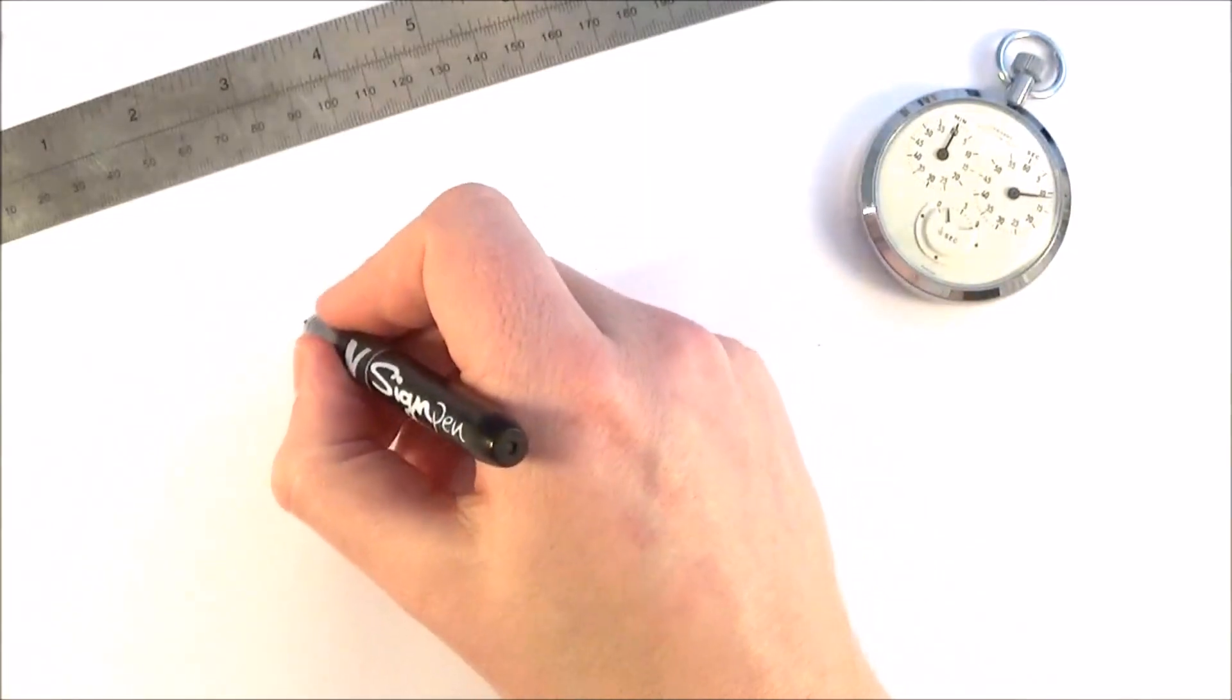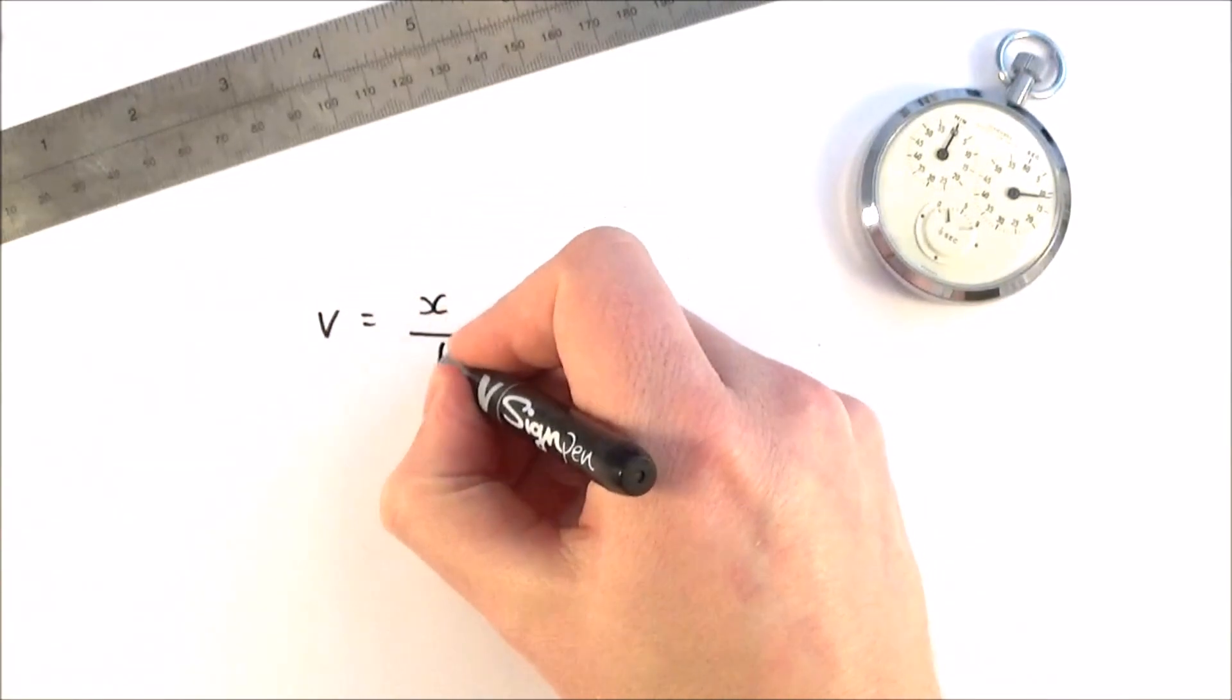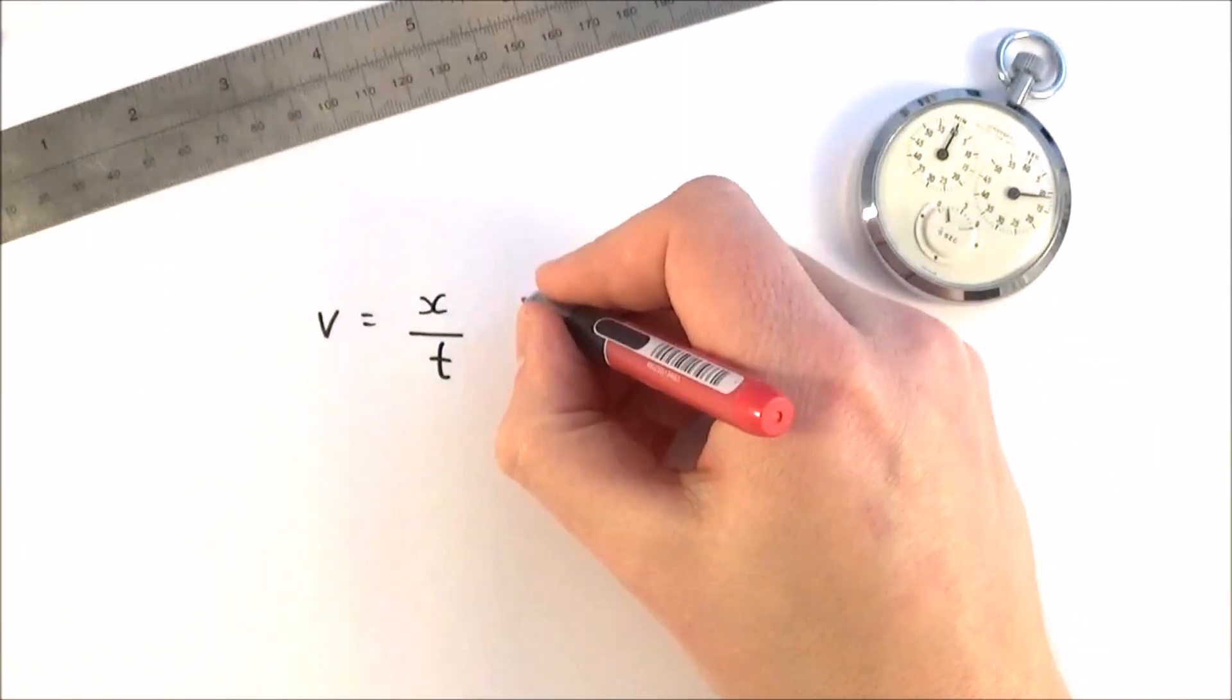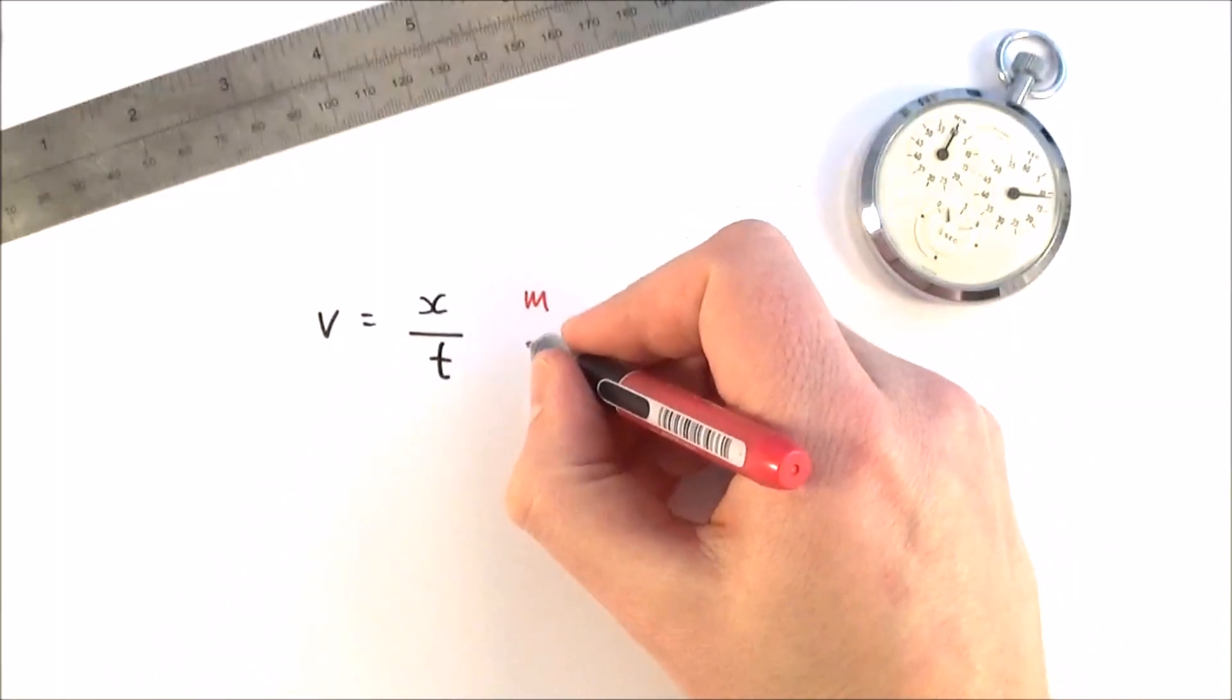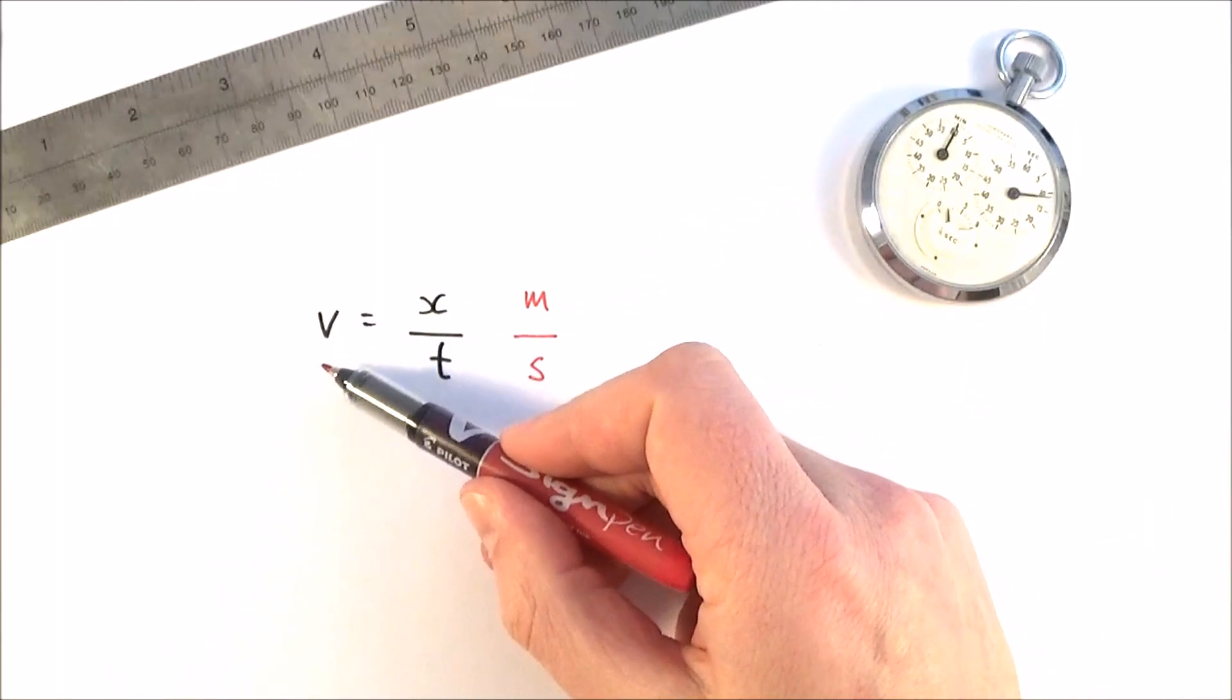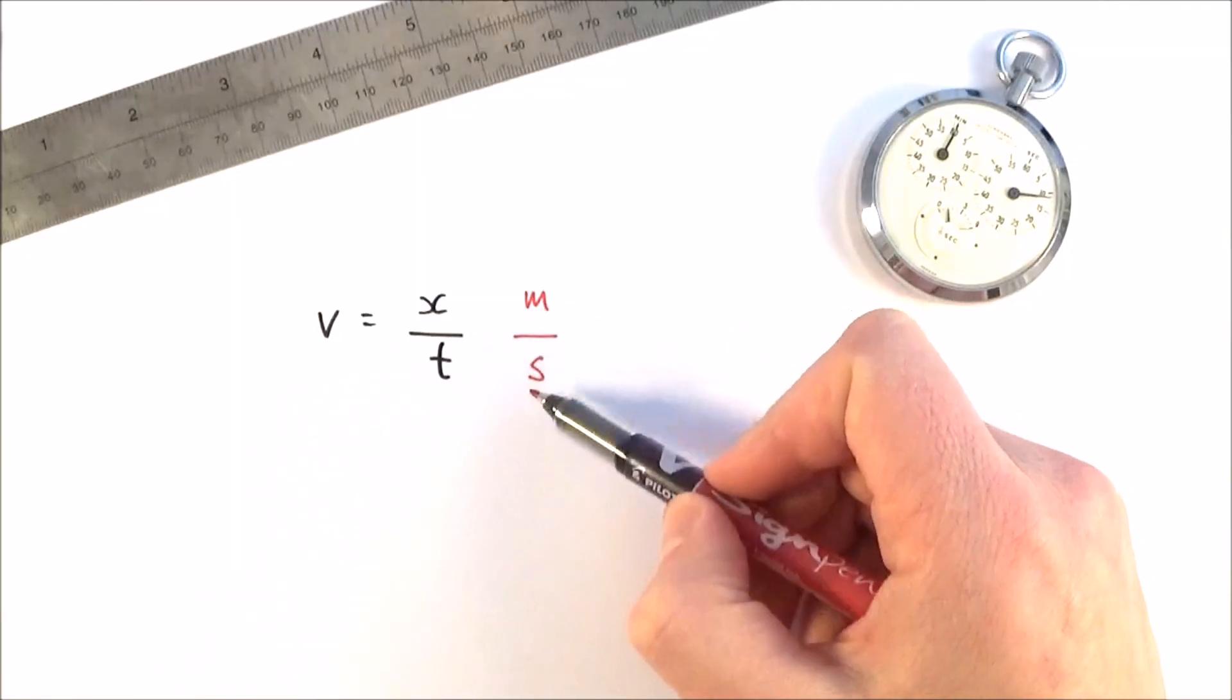So the speed of an object is equal to the distance travelled divided by the time taken. And we measure the distance in metres, and we measure time in seconds. So we can look at the velocity being equal to the metres it's travelled per second.